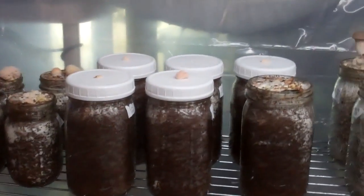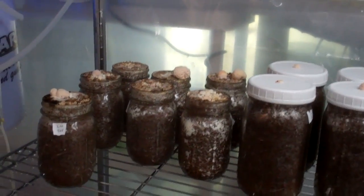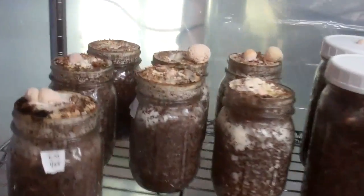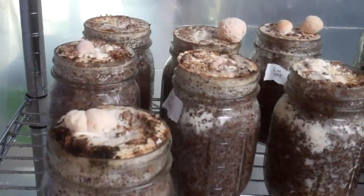For the lion's manes, it's even easier. It takes about ten days or so for the jar to fully colonize, at which point you just simply remove the lid, like these here, and set on the growing rack to grow out their fruits.